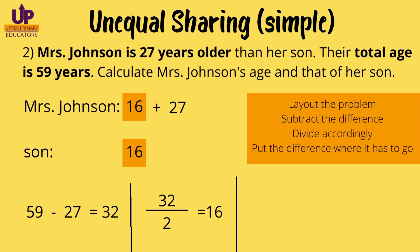Next, we put the difference where it has to go. The difference is the extra portion — so who gets the extra portion? Mrs. Johnson does, because she is 27 years older than her son. So she will get the extra portion. Her son is 16 years old while Mrs. Johnson is 43. We laid out the problem, subtracted the difference, divided accordingly, and put the remainder where it has to go. To check our answer, we add 16 and 43 to get 59, which was the total. So our answer is correct.